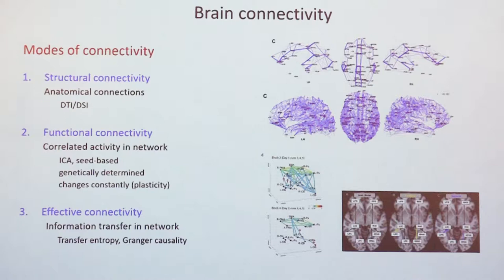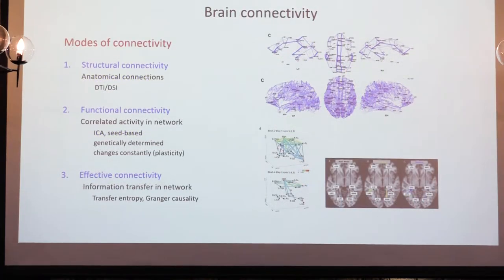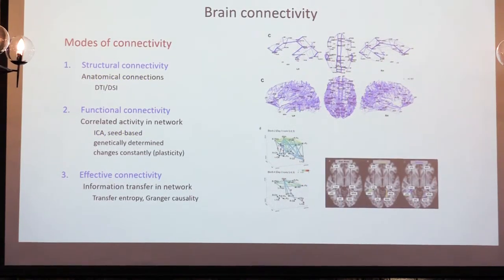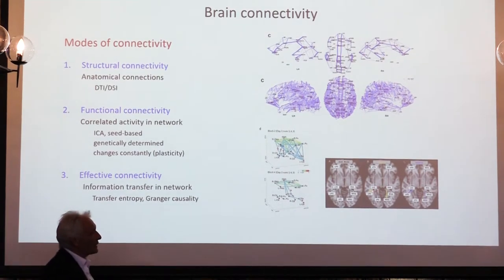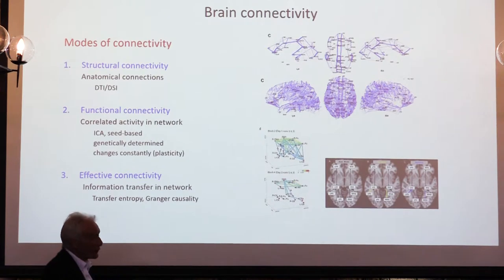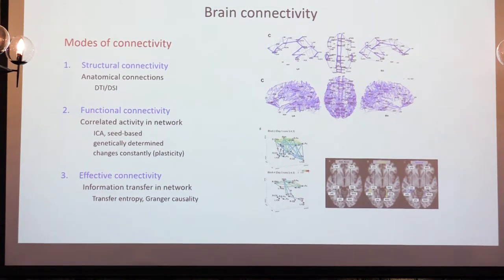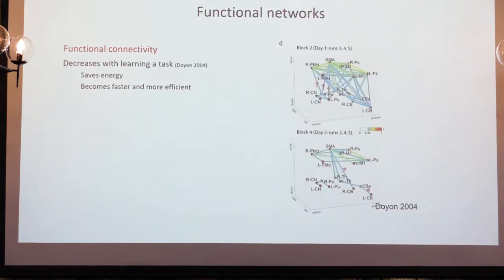For example, in memory: when you store things in memory, the information goes from the hippocampus — which you can conceive of as a librarian — into the cortex. Whereas when you retrieve, the information flows from the cortex back to the hippocampus. You can use that to try and understand how different mechanisms in the brain work.